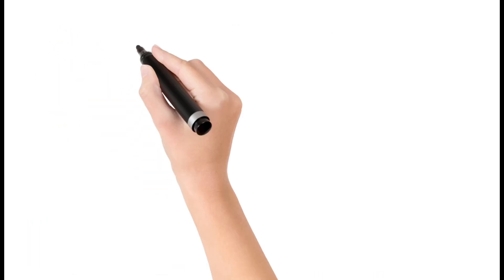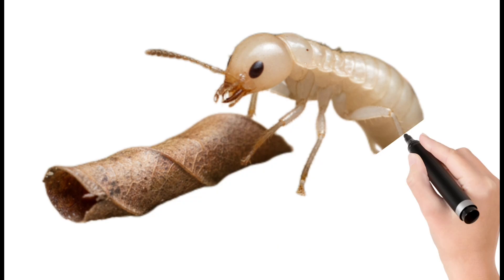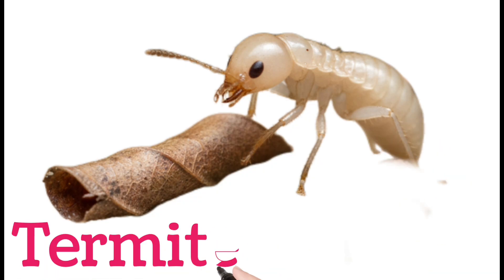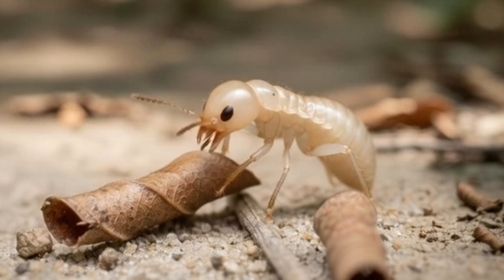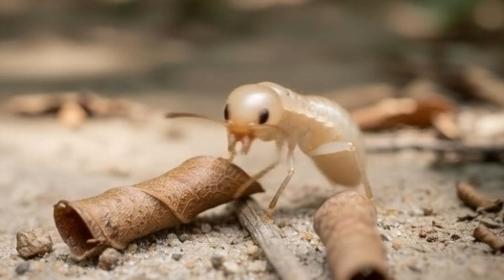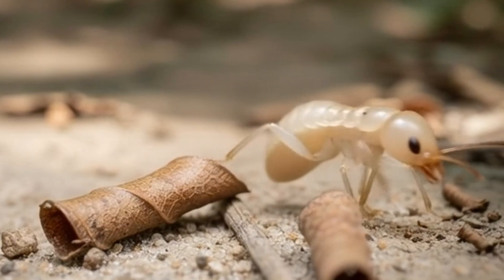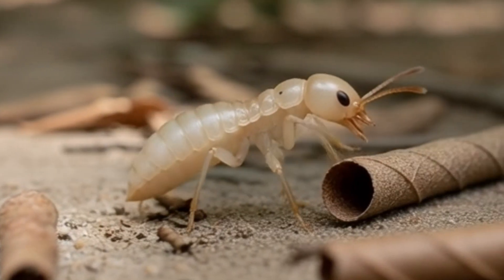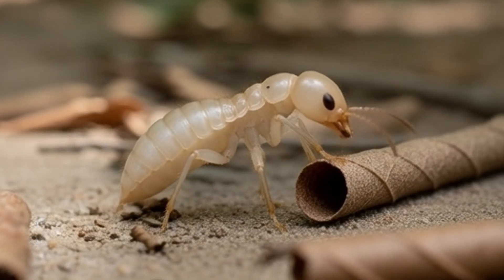Termite. A termite is a small insect that lives in colonies. It feeds on wood and plant material. Termites can cause serious damage to buildings.